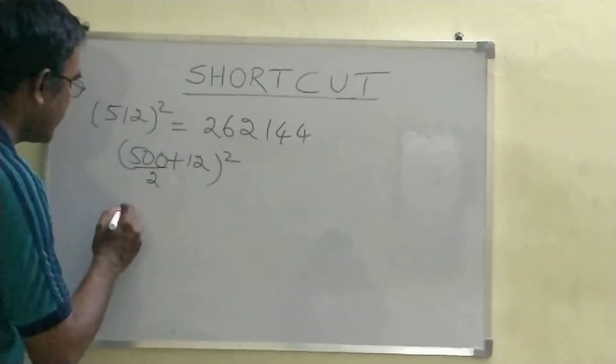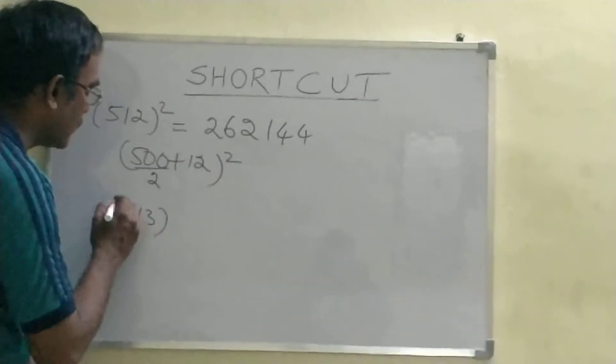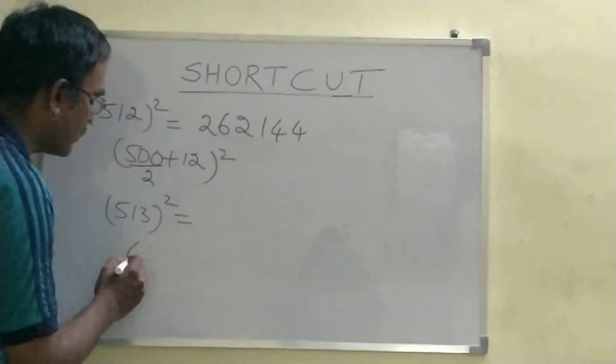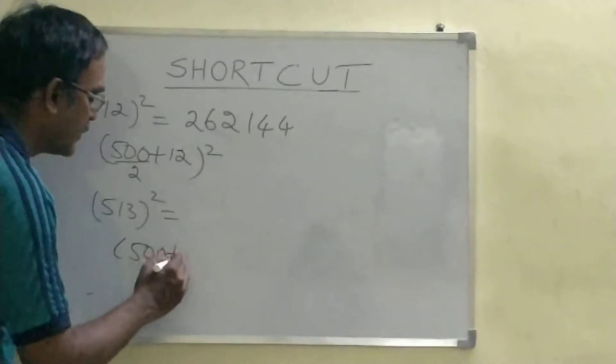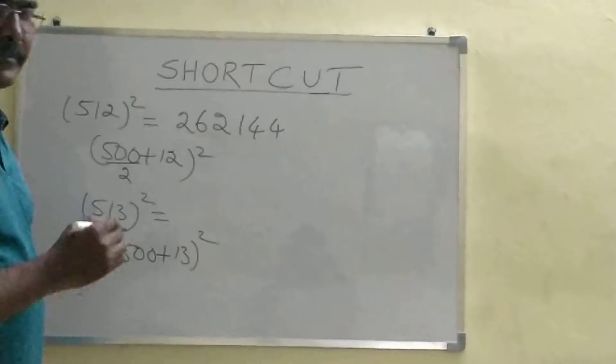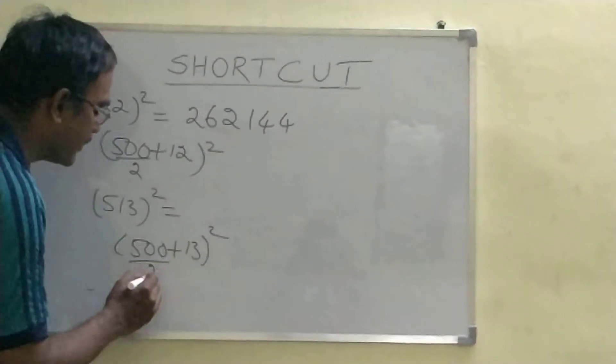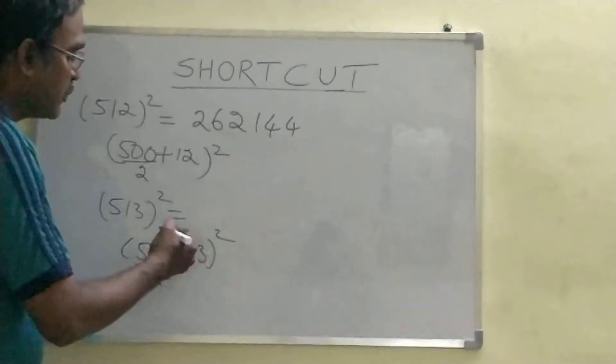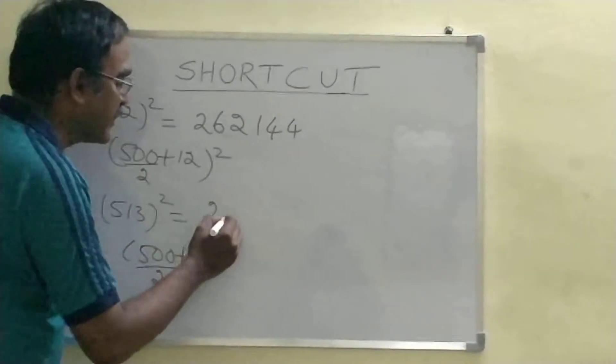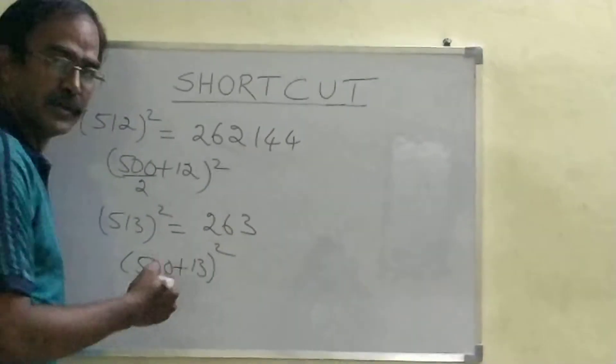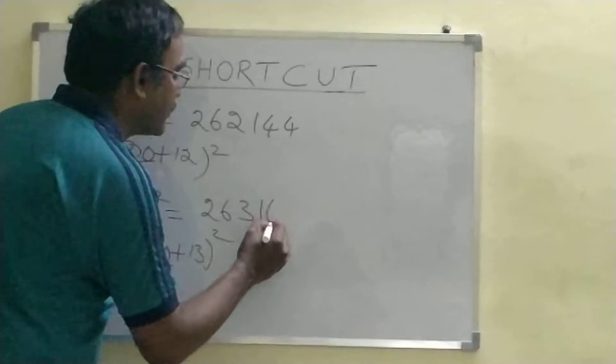Shall I go for one more example? What is 513 whole square? Same way, once you do this, this is 500 plus 13 whole square. So, I am going to divide this number by 2. 500 divided by 2 is 250. 250 plus 13 is 263. And 13 square is 169.